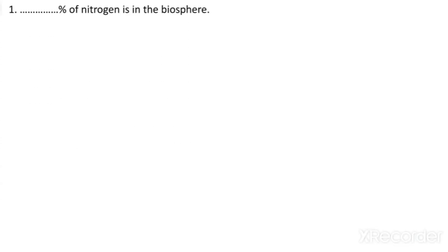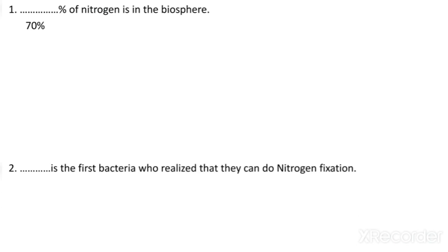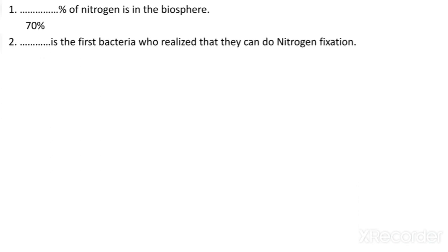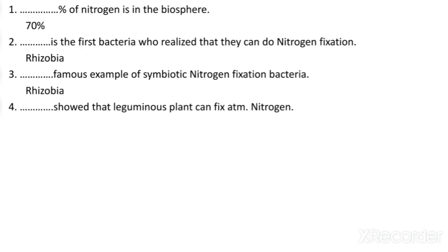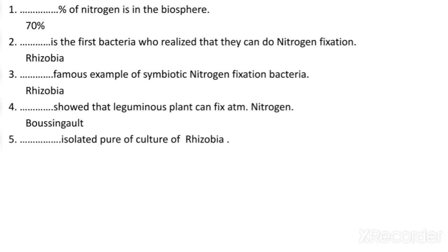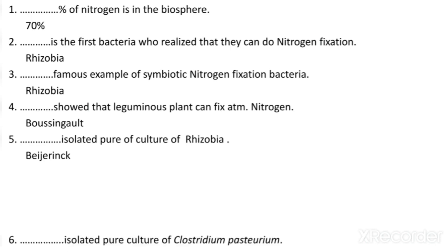First question: how much percentage of nitrogen is in the biosphere? 70% of nitrogen is in the biosphere. Which is the first bacteria that can do nitrogen fixation? The first bacteria was Rhizobium. Which is the famous example of symbiotic nitrogen fixation bacteria? The famous example is Rhizobium. Who showed that leguminous plants can fix atmospheric nitrogen? Boussingault showed that. Who isolated the pure culture of Rhizobium? Beijerinck isolated the first pure culture of Rhizobium.